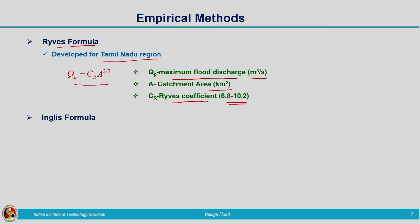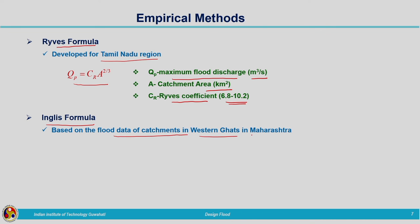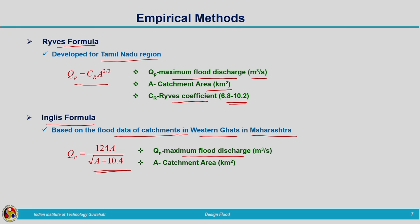Inglis formula is based on flood data from catchments in the Western Ghats of Maharashtra. The formula is: Qp = 124A / √(A + 10.4), where Qp is maximum flood discharge and A is catchment area in km². All these empirical relationships are developed as a function of catchment area alone, providing an approximate estimate of peak flow.